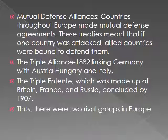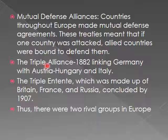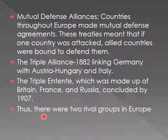Other causes of World War 1 were Mutual Defense Alliances. Countries throughout Europe made mutual defense agreements, meaning that if one country was attacked, allied countries were bound to defend them. The Triple Alliance of 1882 linked Germany with Austria-Hungary and Italy. The Triple Entente, concluded by 1907, was made up of Britain, France, and Russia. Thus, there were two rival groups in Europe.